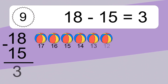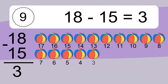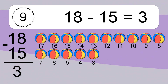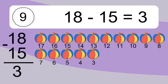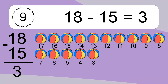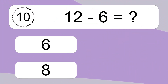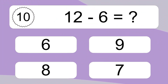18 minus 15 equals what? 18 minus 15 equals 3. Let's count it. 17, 16, 15, 14, 13, 12, 11, 10, 9, 8, 7, 6, 5, 4, 3.